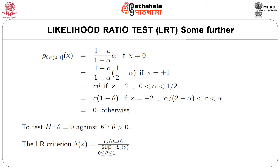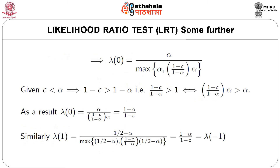Suppose we have to test the null hypothesis H: theta=0 against the alternative hypothesis K: theta>0. The likelihood ratio criterion will be lambda(x) = L(x; theta=0) divided by the supremum of L(x; theta) over all theta in the closed interval [0,1].